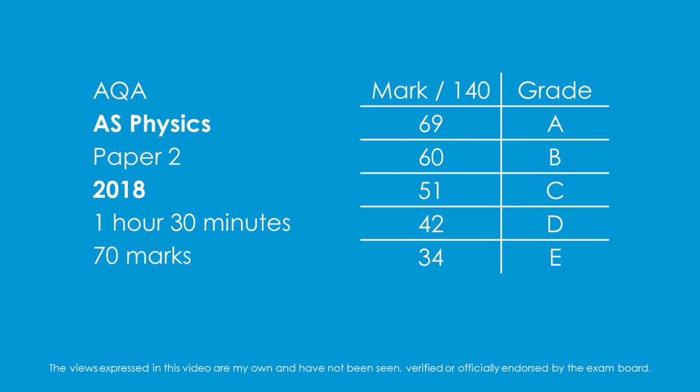Welcome to Paper 2 for AS Physics for AQA from 2018. The combined mark from Paper 1 and Paper 2 is added together, giving a score out of 140. This paper is worth 70 marks; you add it to your score from Paper 1 and that gives you your grade boundary. Let's get started with question number 1.